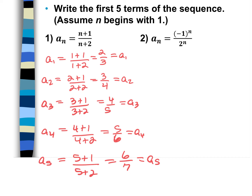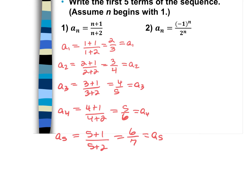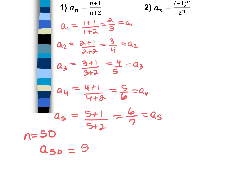Later in the WebAssign homework they might say find the 50th term, where n equals 50. You would plug in 50: (50+1)/(50+2) = 51/52. For Day 1 of the 11-1 homework, this is all you're doing.